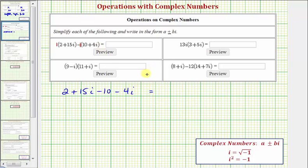And now we'll combine like terms. Notice 2 minus 10 is equal to negative 8, and 15i minus 4i equals 11i, so we have plus 11i. Notice how we have found the difference, and it is in the form of a plus or minus bi. So the difference is negative 8 plus 11i.